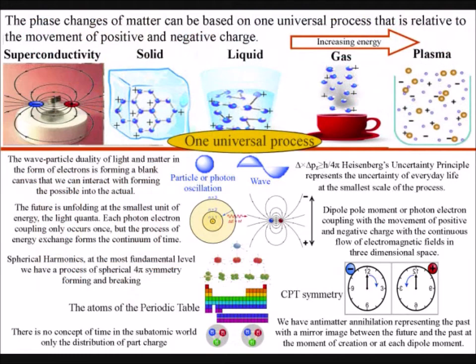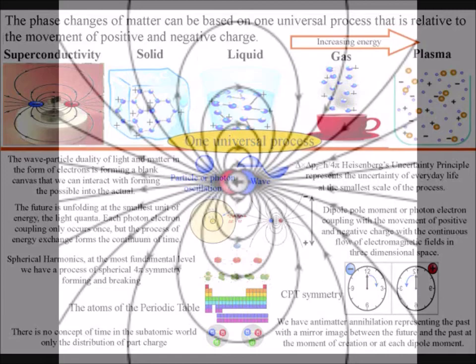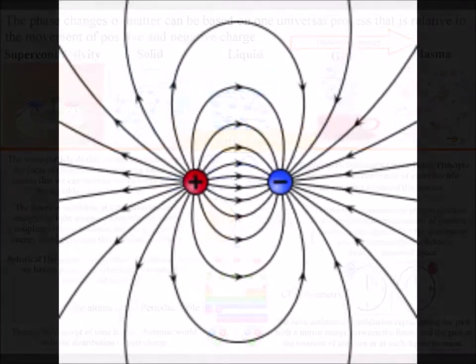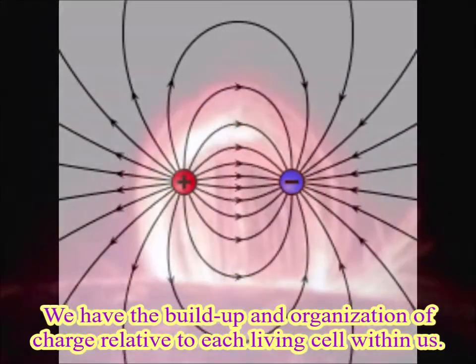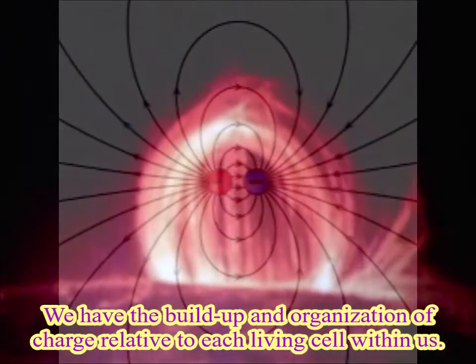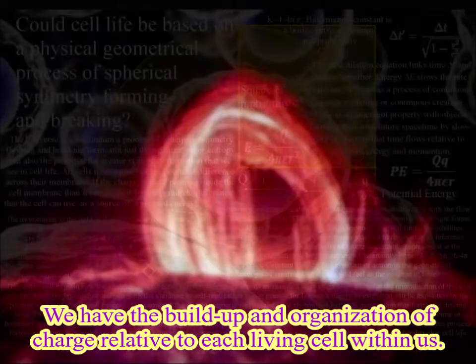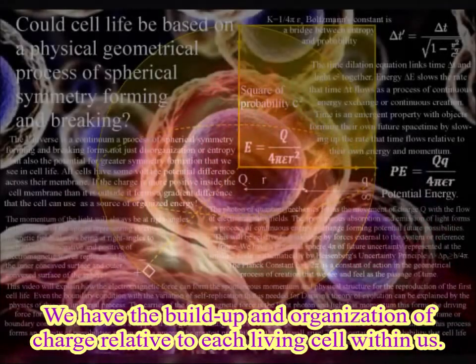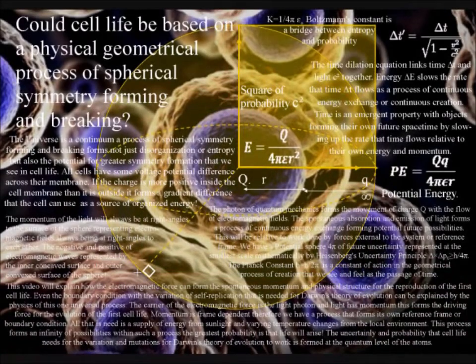But at high temperatures we have a phase change in matter, with the same geometrical process unfolding over a much larger scale, with charge being able to cover a large area of interstellar space. It is hard to get your head around the idea that the very small world of our everyday life can be based on the same geometry as the large objects of interstellar space.